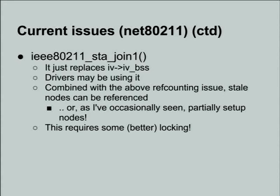The other issue is a specific function that will replace the BSS node and remove the reference to it, but there is no locking around that. So thread A calls this function to update a node, thread B wants to use it to receive a packet for the network, and it can end up trying to receive a frame using a node that has just been freed underneath it. This is another one of those stupid race conditions that requires me to actually fix the locking.